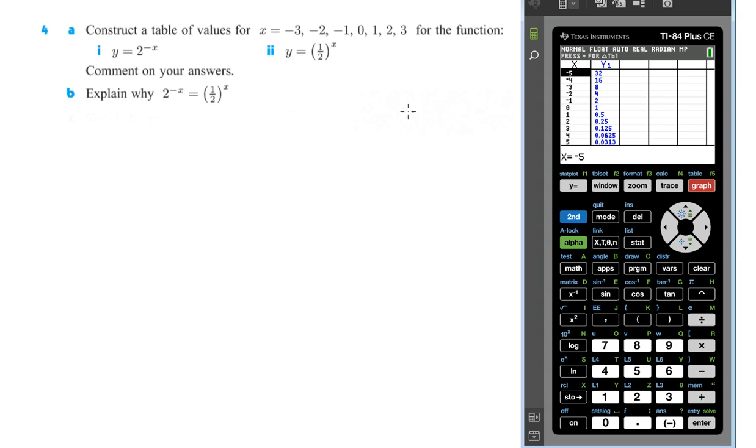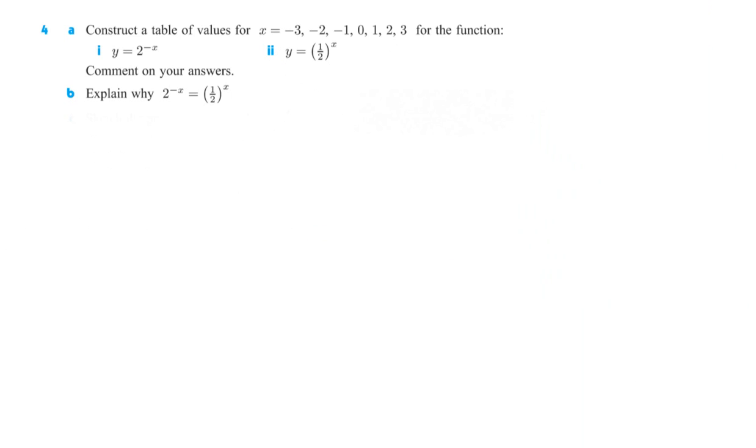So negative 3 is at 8. Let's make ourselves a table of values here. For part i here, we got y equals 2 to the negative x. So we got negative 3, negative 2, negative 1, 0, 1, 2, and 3. So we've got our table. And now we're just going to fill in all of our values accordingly. Negative 3 we already saw was at 8.